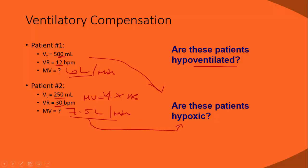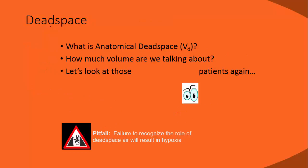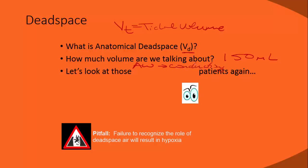Ventilation can impact respiration, but we must account for anatomical dead space. Dead space (VD) represents the conducting airways where no gas exchange occurs — approximately 150 mL in a normal adult. A tidal volume of 250 mL minus 150 mL of dead space means only 100 mL actually reaches the alveoli — about a fifth of a 500 mL bottle. That is very little effective ventilation.